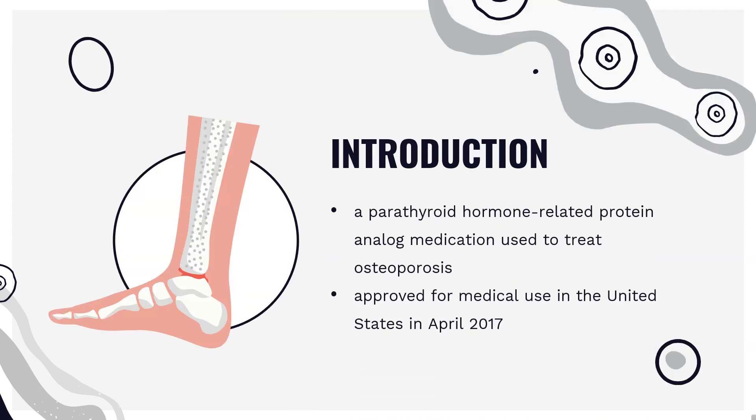Abaloparatide, sold under the brand name Tymlos among others, is a parathyroid hormone-related protein analog medication used to treat osteoporosis. It is an anabolic agent. The most common side effects include hypercalciuria and dizziness. Abaloparatide was approved for medical use in the United States in April 2017 and in the European Union in December 2022.